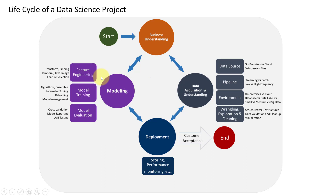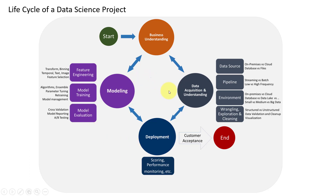Once the modeling stage is completed, the next step is deployment. Only through deployment can we convert our machine learning or deep learning model into a usable product for customers. We can use cloud platforms like AWS, Azure, or Heroku for deployment. Deployment can also be done with Python libraries like Flask, which handles front-end operations via APIs and returns the corresponding output to the customer.